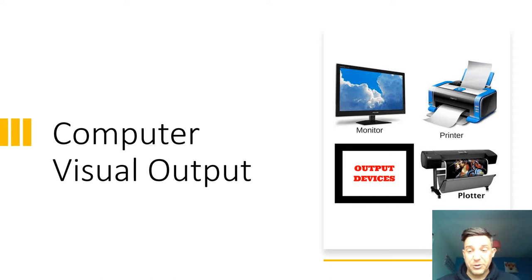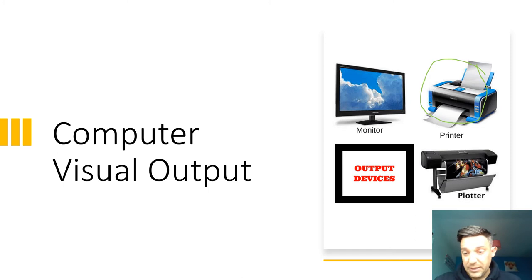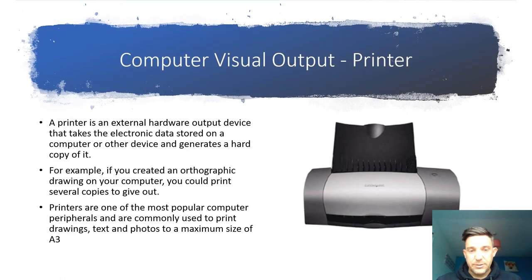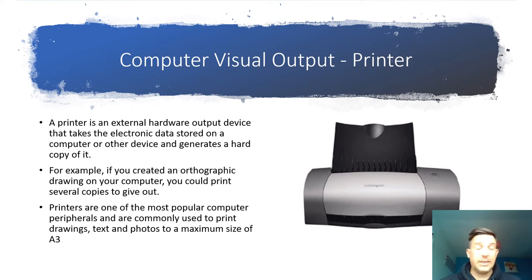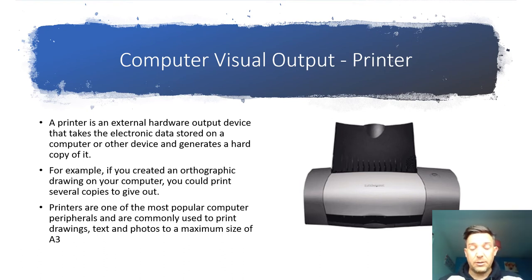Now we're going to look at a couple of the visual options for storing or outputting data from a CAD system. We have printers, plotters, and we're also going to look at VDU. A printer is an external hardware device — it's not built into the computer but it is part of the computer system. You can generate hard copies of data; if you're using CAD it will be drawings, reports, or three-dimensional photo-realistic images that you've created, creating a physical hard backup copy of what you've done on the computer.